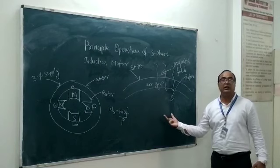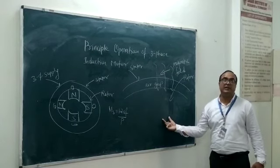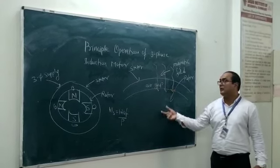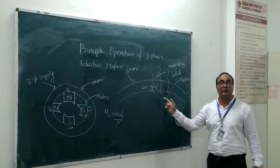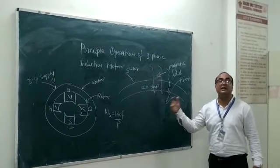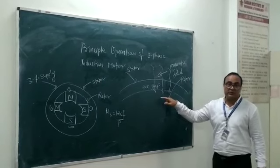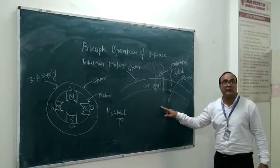In this condition, the rotor conductor is initially stationary. The rotating magnetic field rotates around the rotor, crosses the air gap, and impacts the rotor conductor.